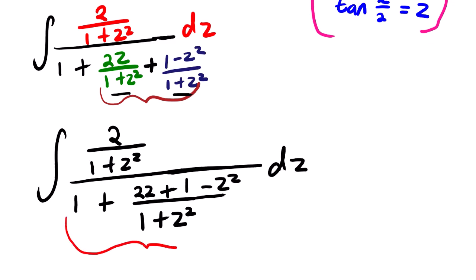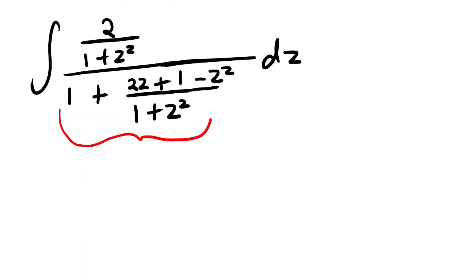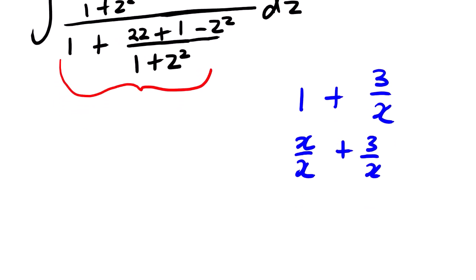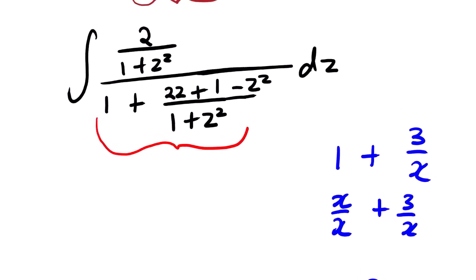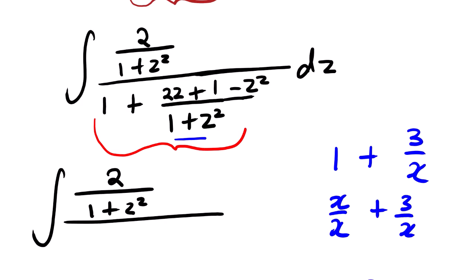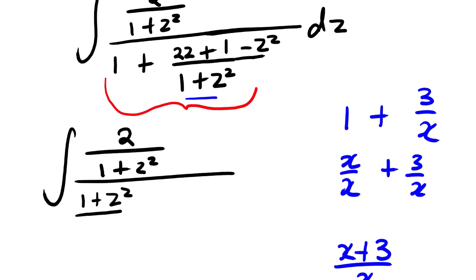We need to add this again. Any number added to 1 is straightforward — one of the terms will be 1. For example, if you want to add 1 plus 3 over x, we need to express 1 in terms of this denominator. We know that any number divided by itself equals 1. So 1 is the same as x over x, giving us x over x plus 3 over x. Since the denominators are common, we take one denominator and get 3 plus x over x. So 1 is the same as 1 plus z squared over 1 plus z squared.